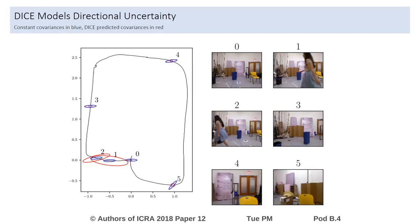Here we show our performance on an example test set. On the left, constant covariances are plotted in blue and DICE predicted covariances are plotted in red. DICE covariances estimate elongated uncertainties in the direction of the motion of the person and smaller covariances in regions characterized by less measurement noise.